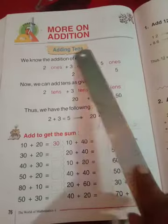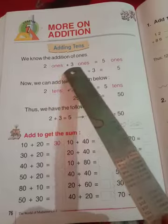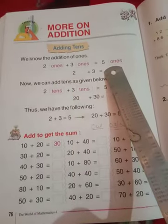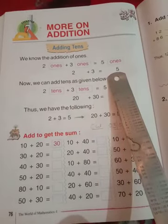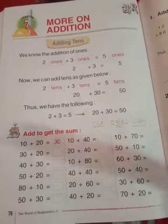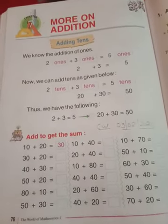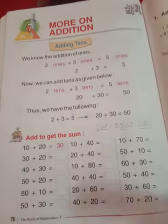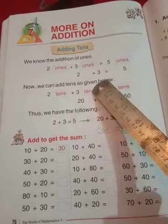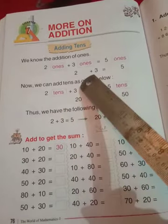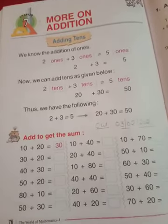Adding Tens. We know the addition of ones. Two ones plus three ones equals five ones, means two plus three equals five. Ones means no zero. Two ones means only two. Three ones means only three. Two plus three equals five. Once means no zero, only one number.